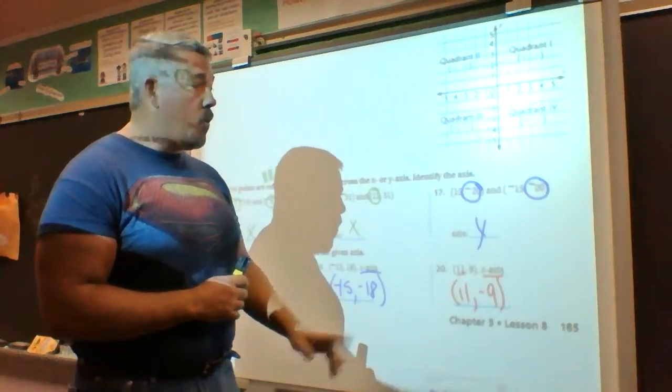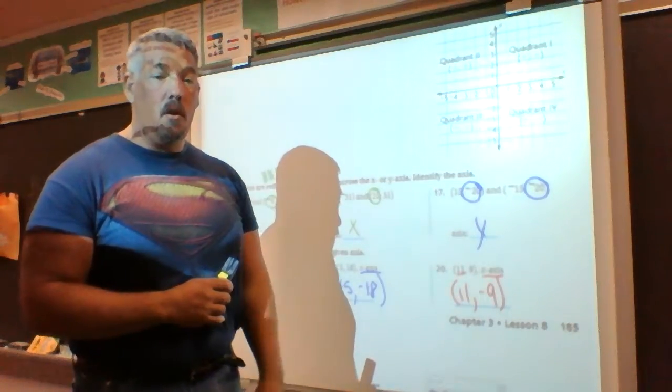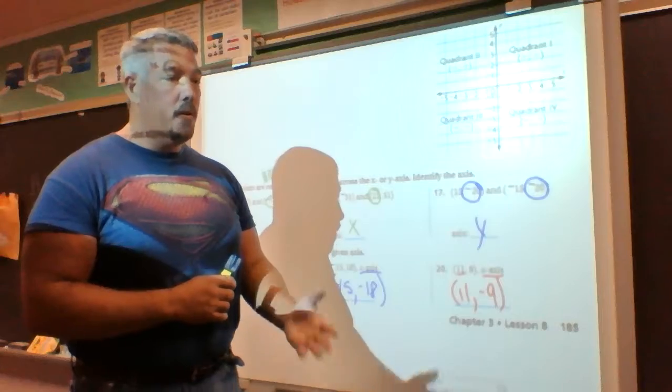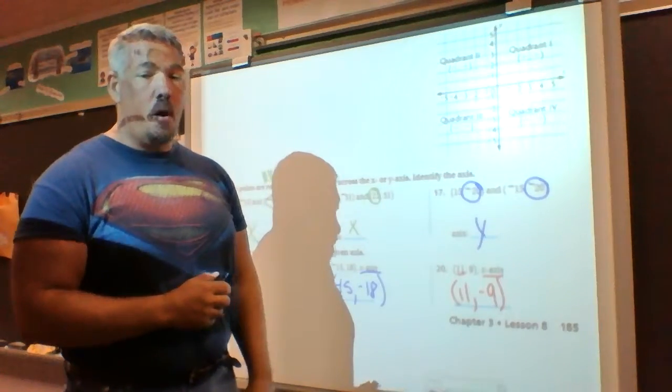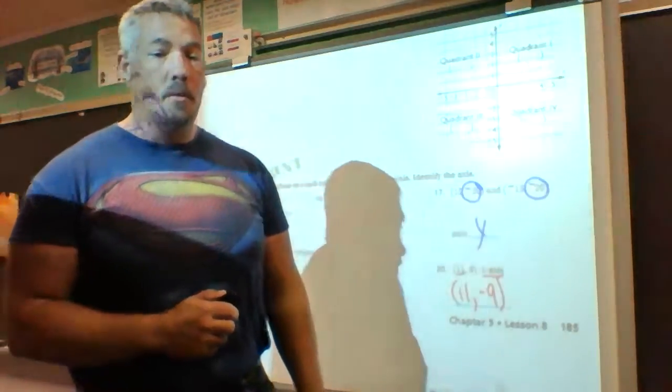Remember: x is always first, y is always second; run before you jump; quadrant 1 is positive-positive, 2 is negative-positive, 3 is negative-negative, 4 is positive-negative; a reflection crosses either the x-axis or y-axis, and whichever axis it crosses is the line of reflection that always stays the same. If you have questions while working on homework, please come and ask.